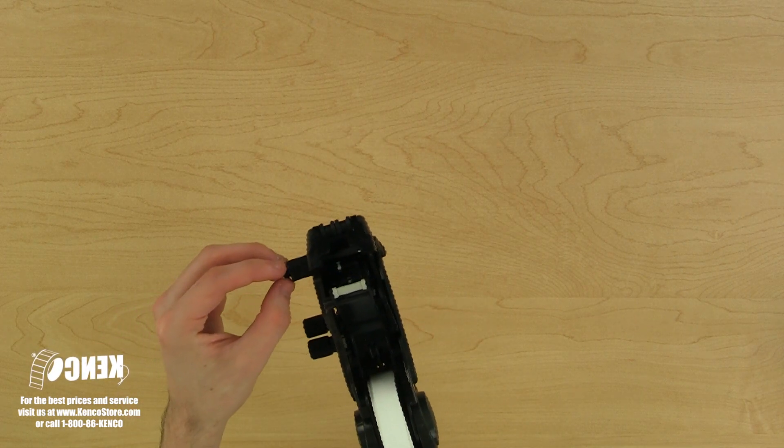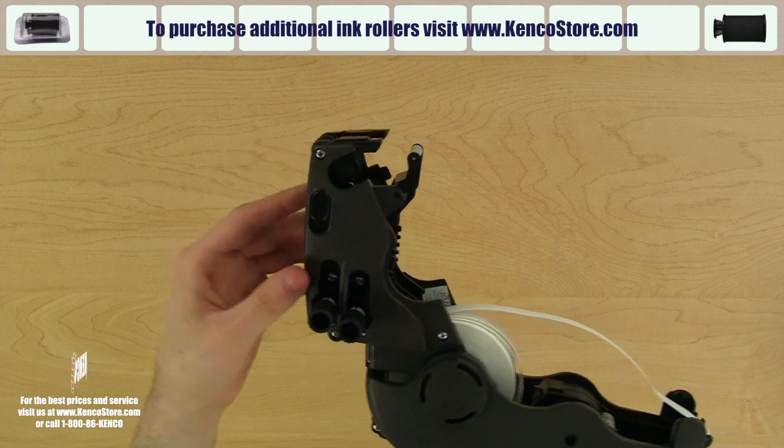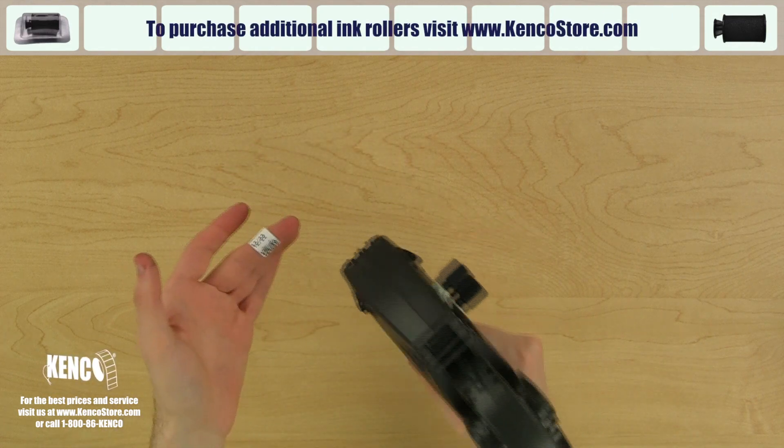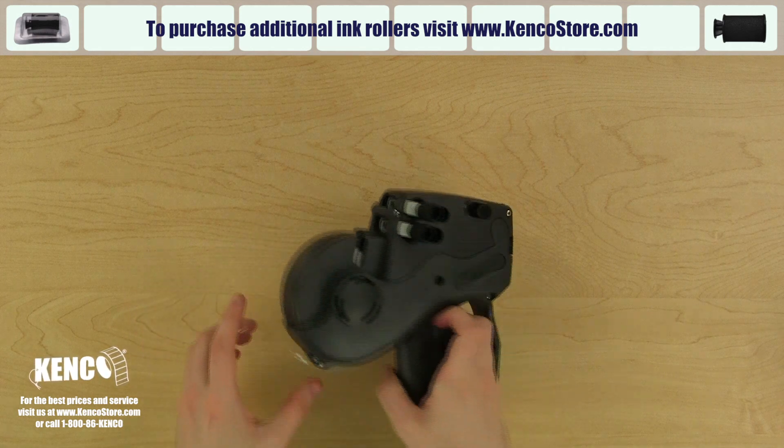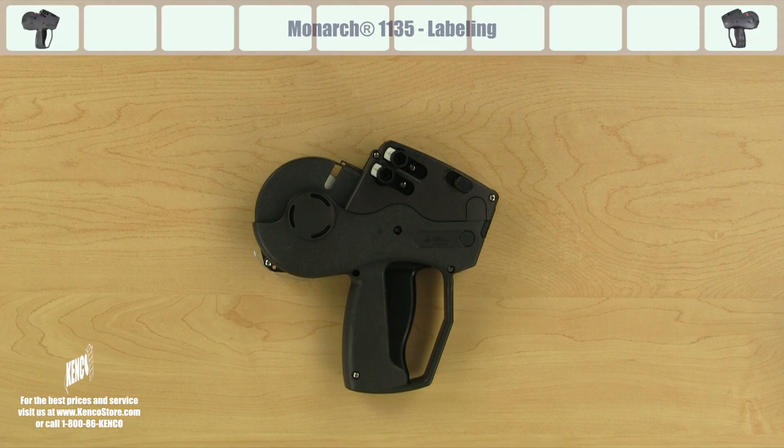Once the ink roller is removed we will get our replacement ink roller from its packaging and slide it onto the ink roller rod. It should snap right on. Additional ink rollers can be purchased from kencostore.com. Now that we've put the new ink roller in we can begin labeling.